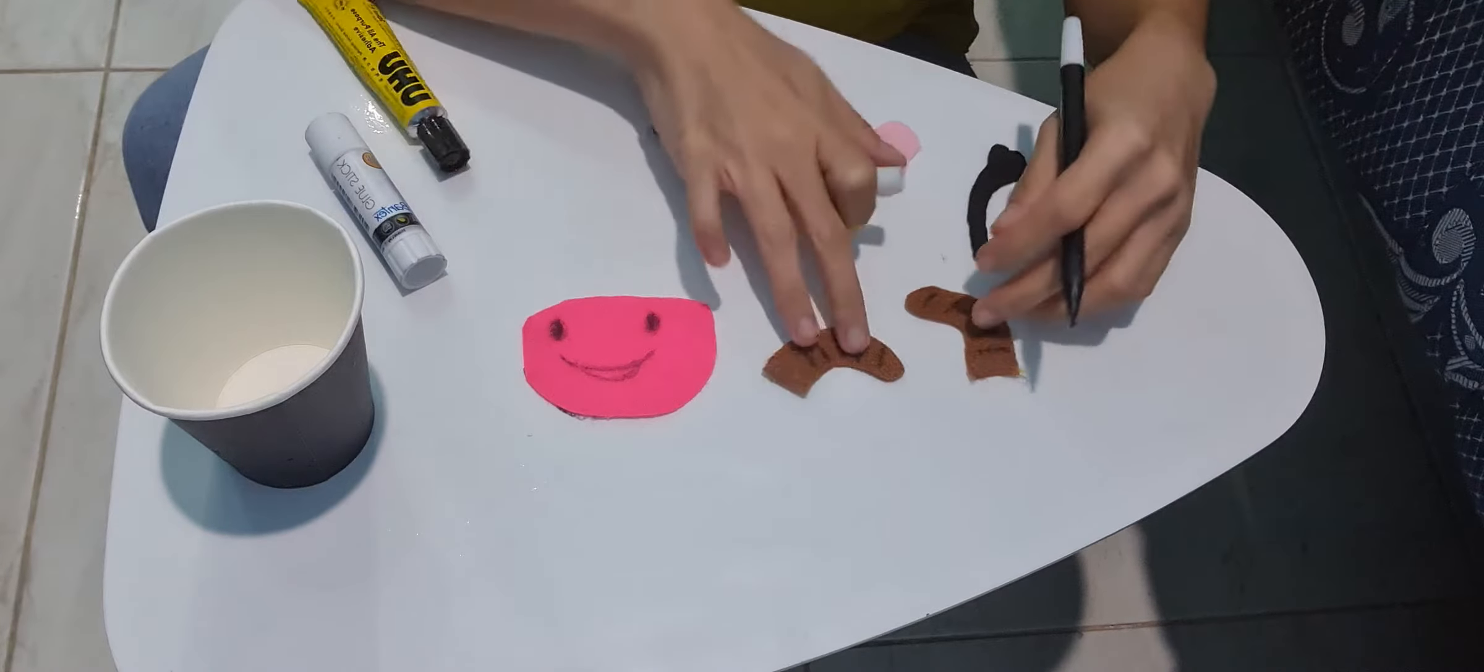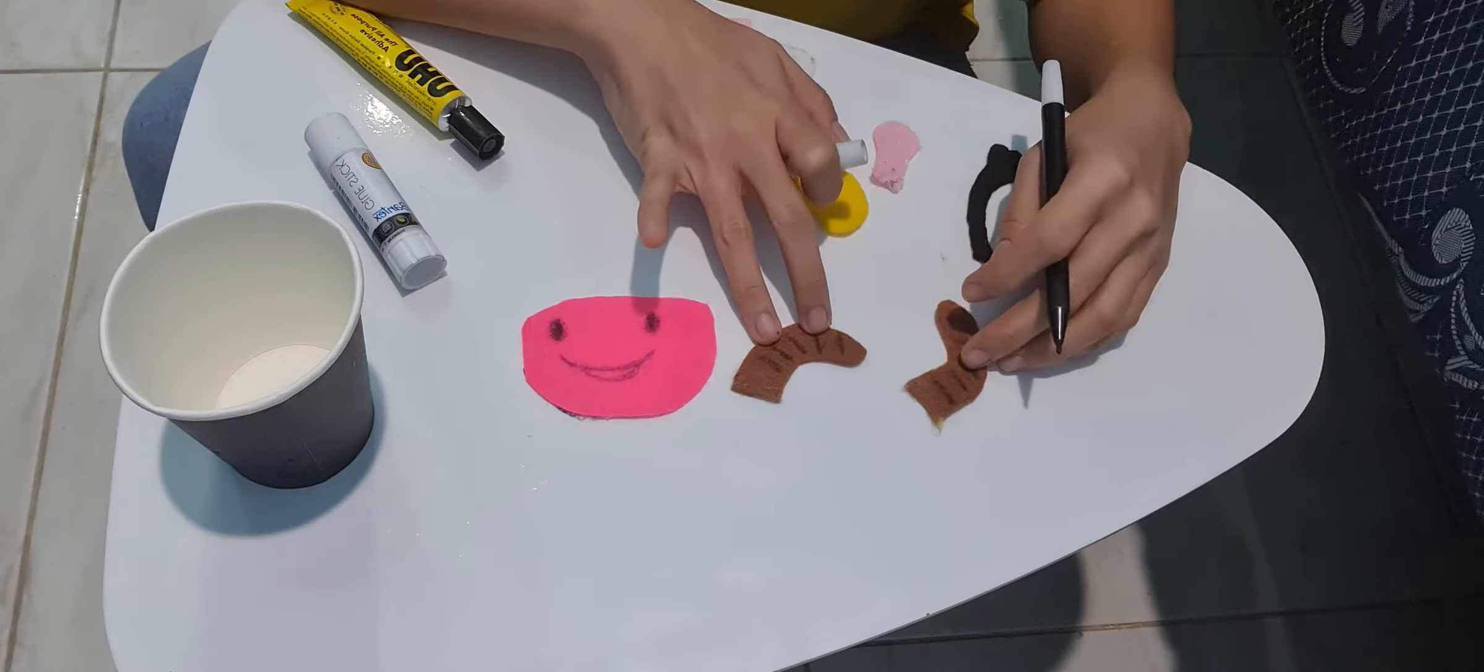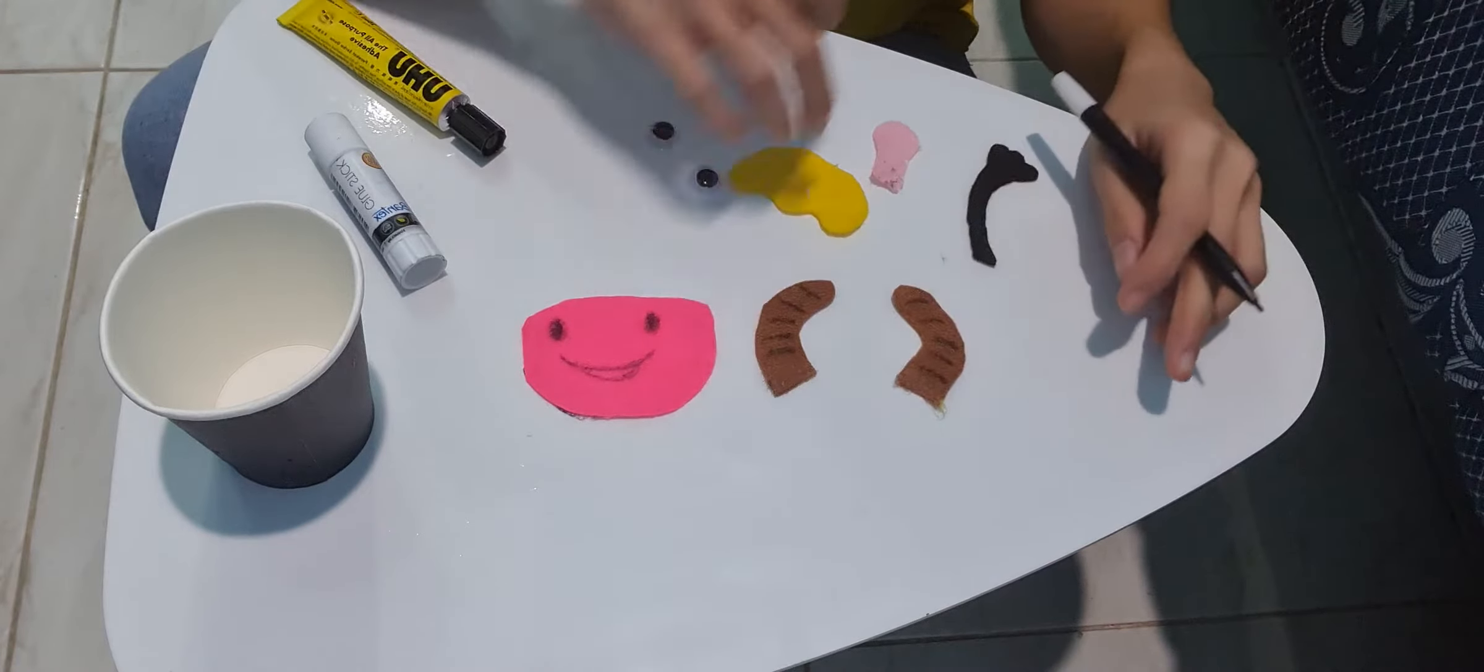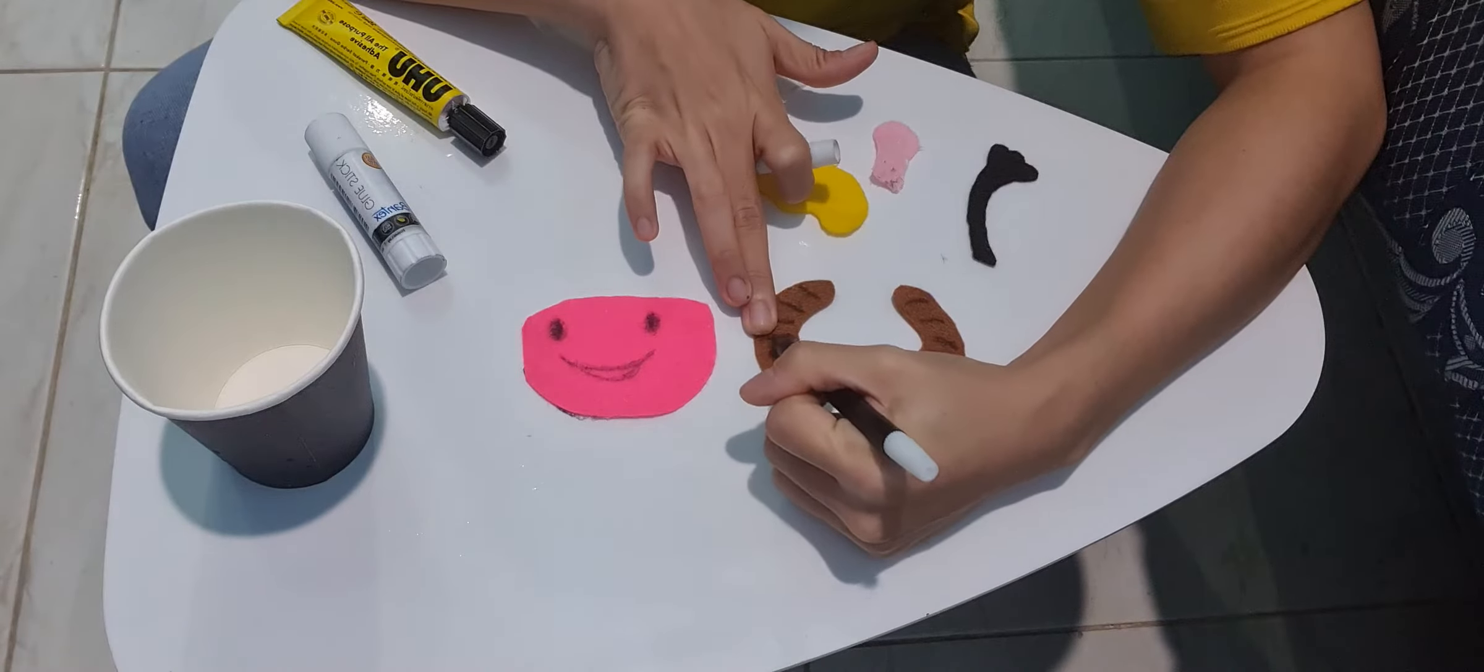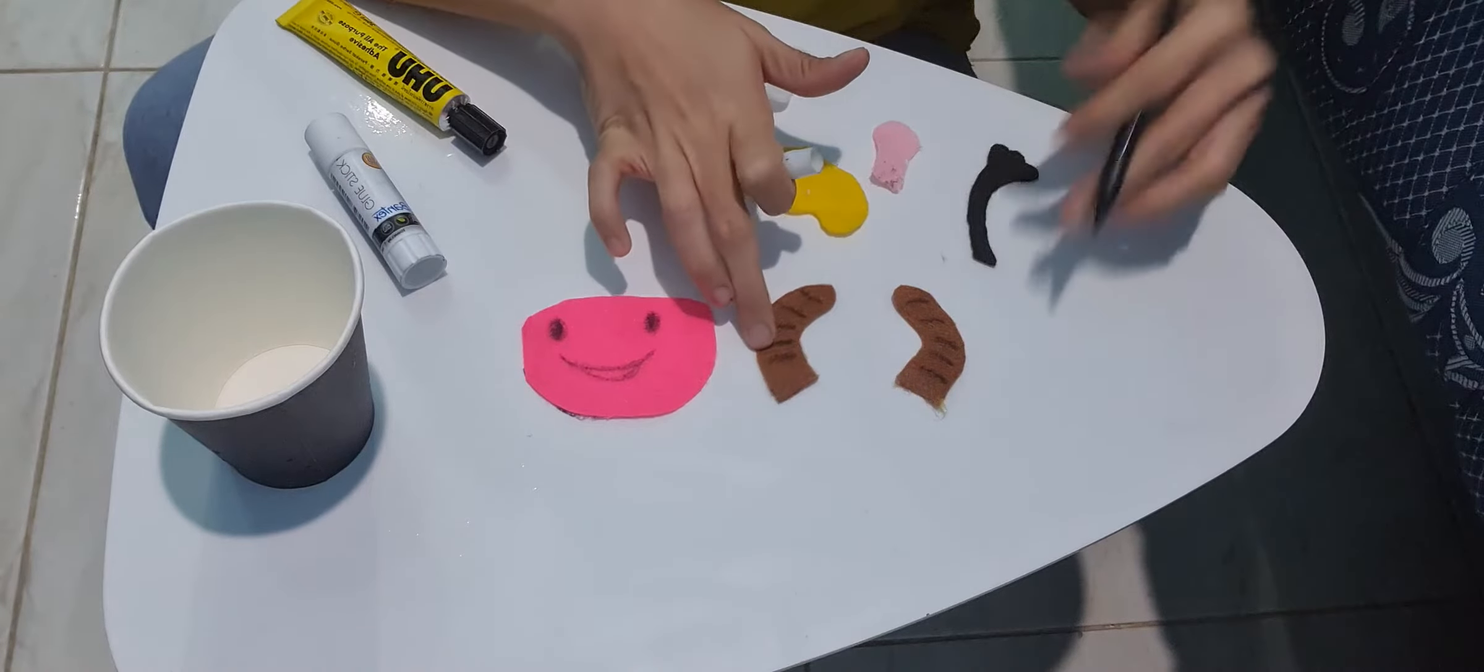And these are for the horns. We will paste it like this. Later I want you to draw a line on the brown one.